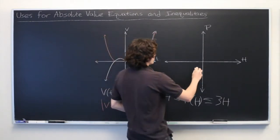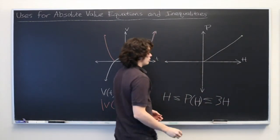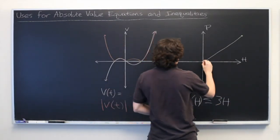So you can plot the line p equals h and we'll plot the line p equals 3h.